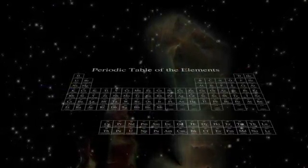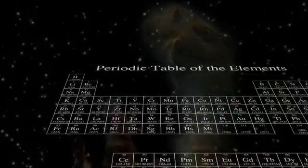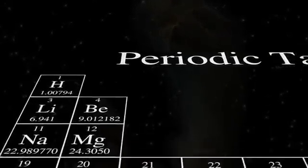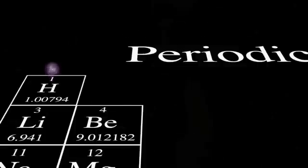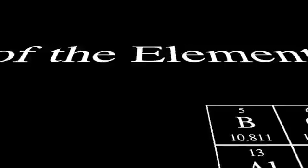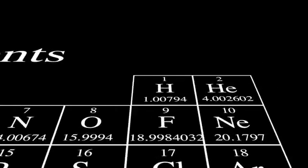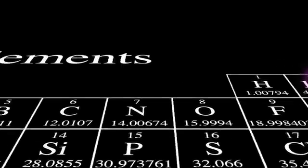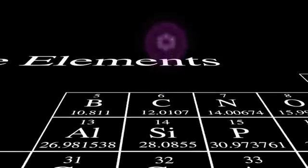The Periodic Table is a list of all the atoms in the universe that have different numbers of electrons. Hydrogen has one electron. Helium has two. Carbon has six.